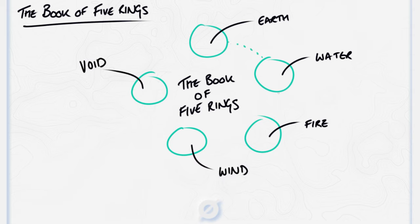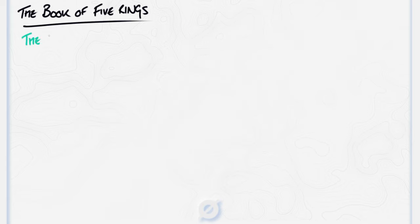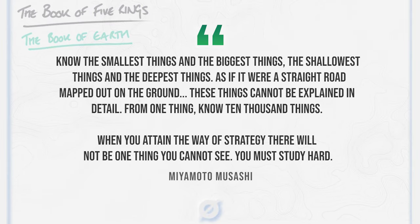The Book of Earth is Musashi's introduction to the way, and outlines the strategy he teaches his students. Know the smallest thing and the biggest thing, the shallowest thing and the deepest thing, as if it were a straight road mapped out on the ground. These things cannot be explained in detail. From one thing, know ten thousand things. When you attain the way of strategy, there will not be one thing you cannot see. You must study hard.